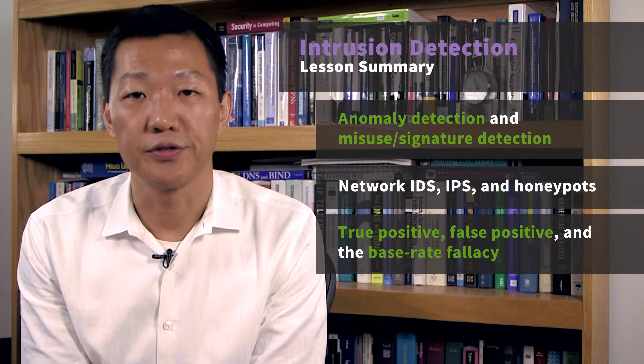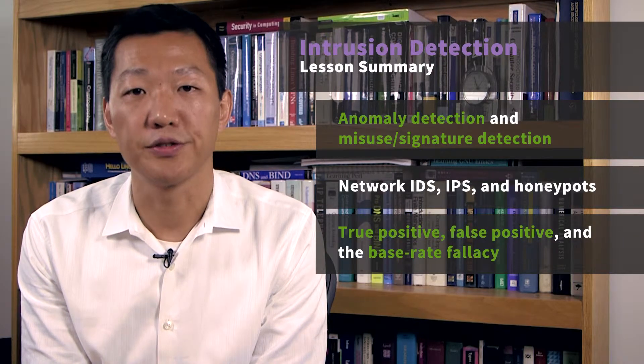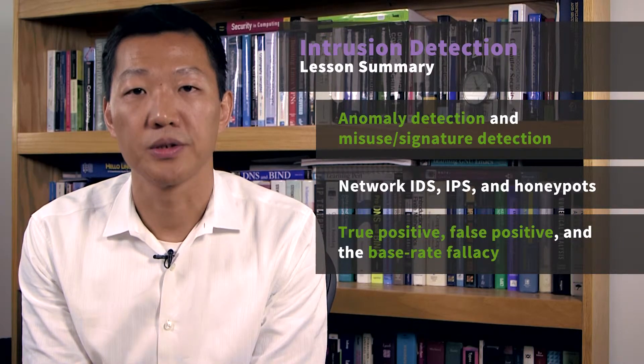True positive and false positive are the main performance metrics, and the effect of false positive is highlighted by the base rate fallacy.